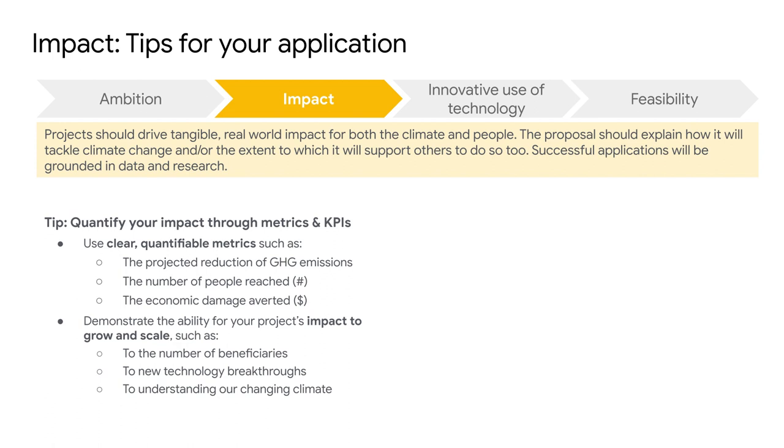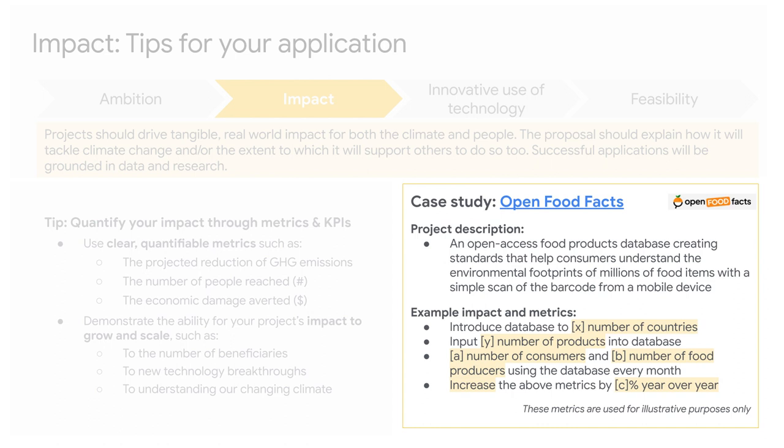Let's use another previous recipient as an example. Open Food Facts is a food products database that is available to the public. If you are ever curious about the environmental footprint of your favorite biscuit, Open Food Facts will provide an eco-score on how the product measures against environmental impacts with a simple scan of the barcode from a mobile device. Imagine reading the Open Food Facts application to this challenge — you may see metrics such as the number of countries the database reaches, the number of products within it, the number of consumers and food producers who tap into the database each month, and the growth of these metrics year over year. With this evaluation criteria, we're looking for you to show us a preview of the incredible results your project can achieve.